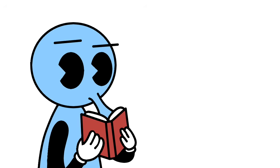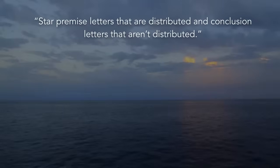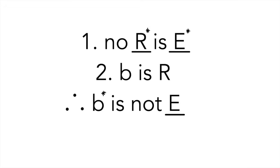Next, we need to star certain letters. Star premise letters that are distributed, and conclusion letters that aren't distributed. So, for our example here, our first premise has both letters distributed, so we star both of them. None of the letters in our second premise is distributed, so nothing gets starred. Finally, in our conclusion, we only star B because it is not distributed. This is now what our syllogism looks like both distributed and starred.